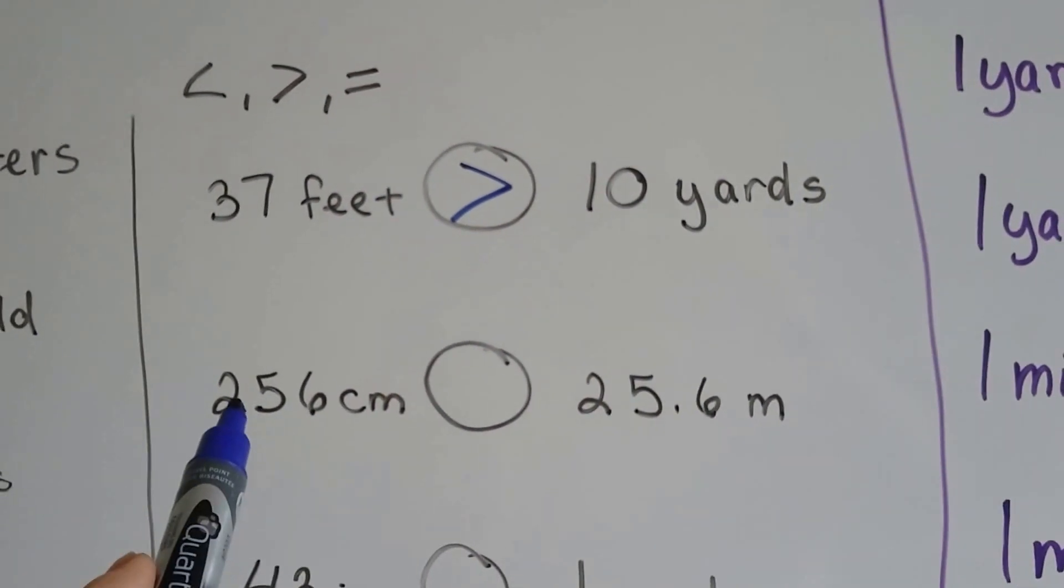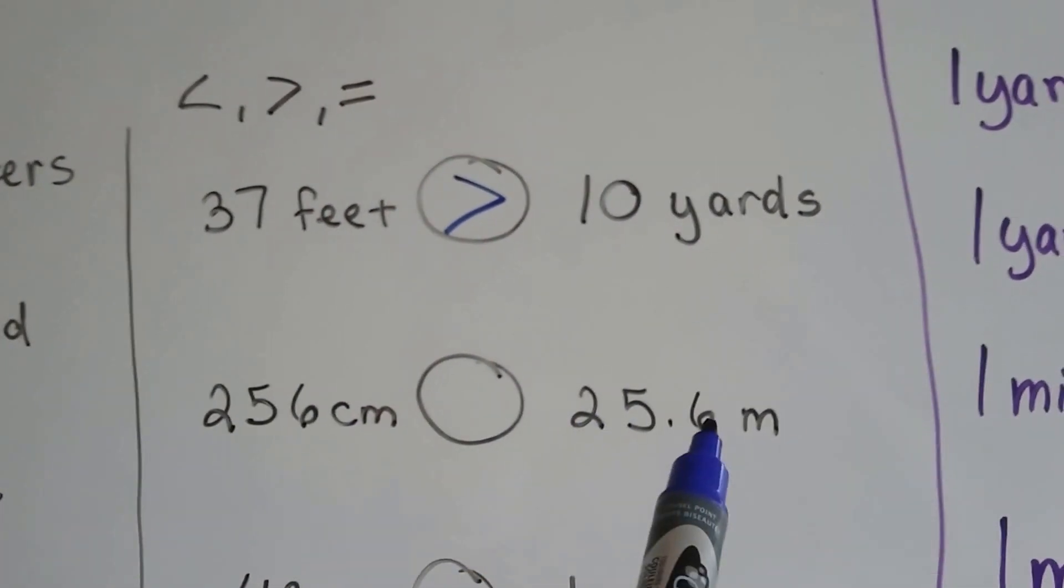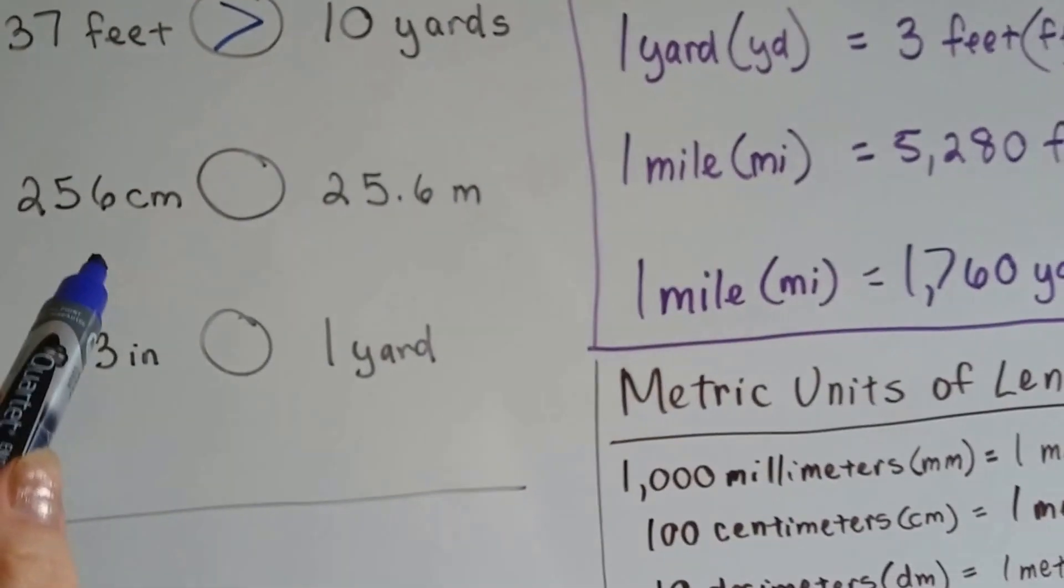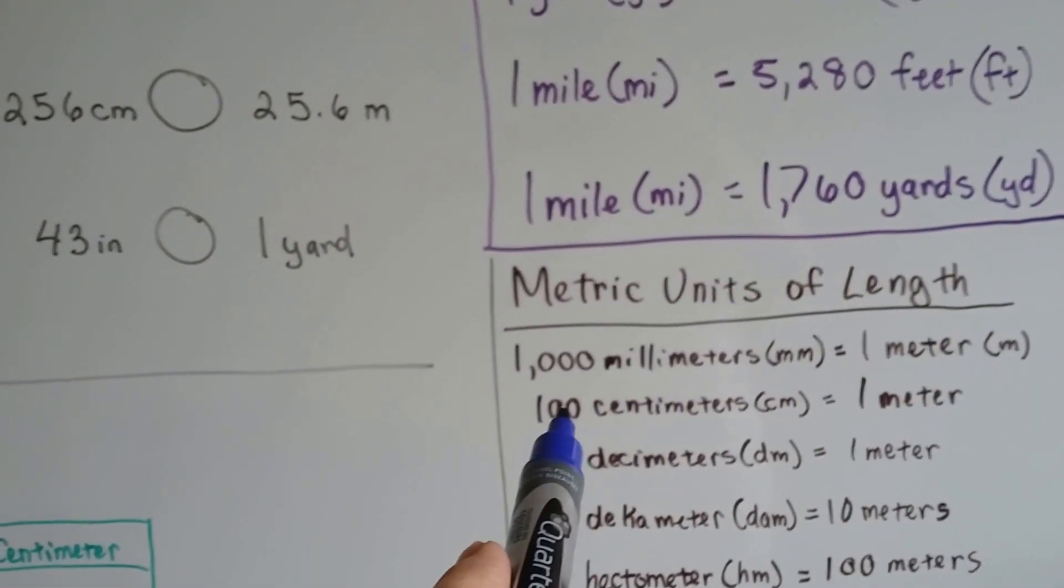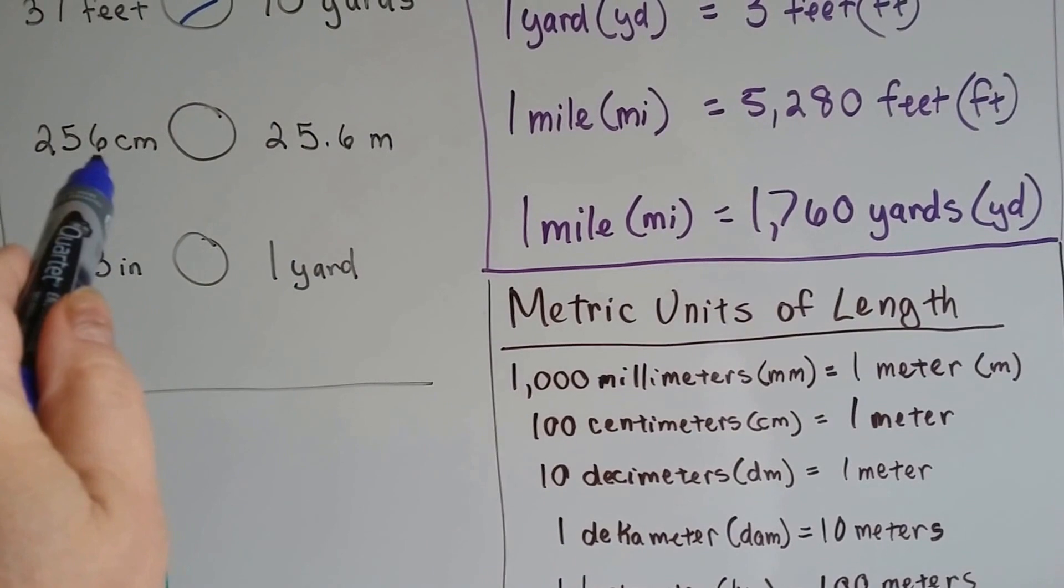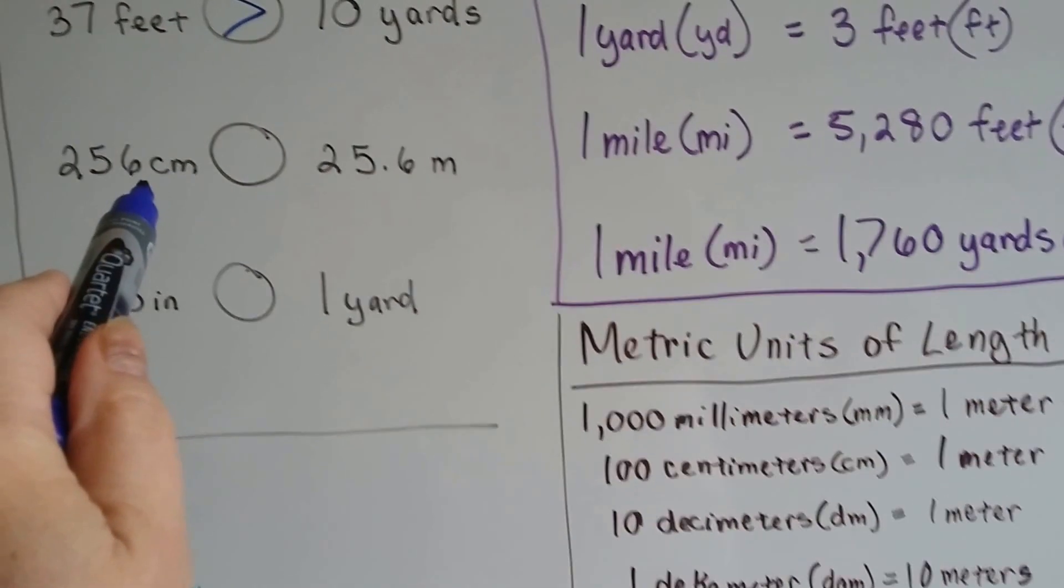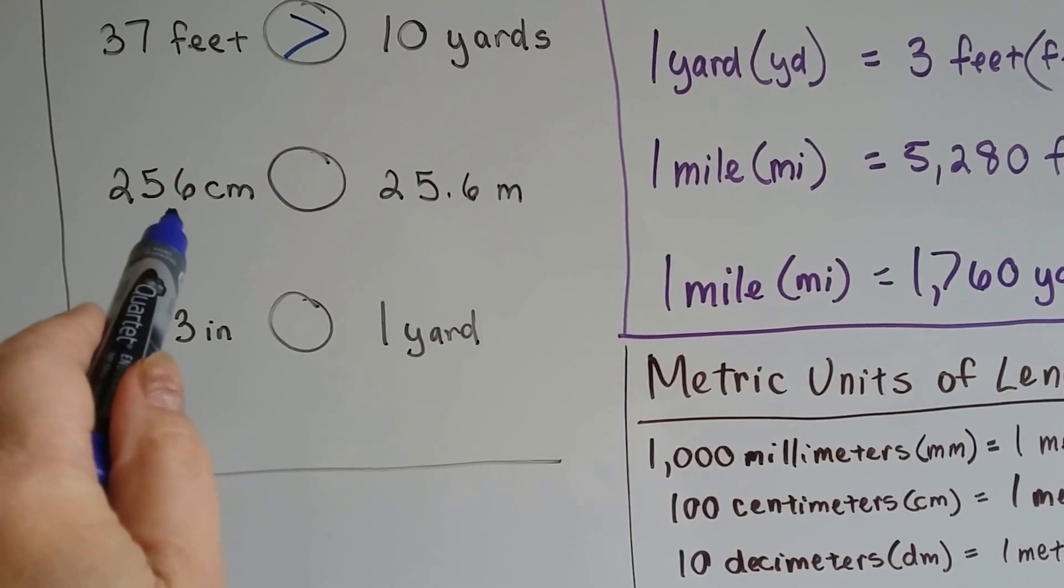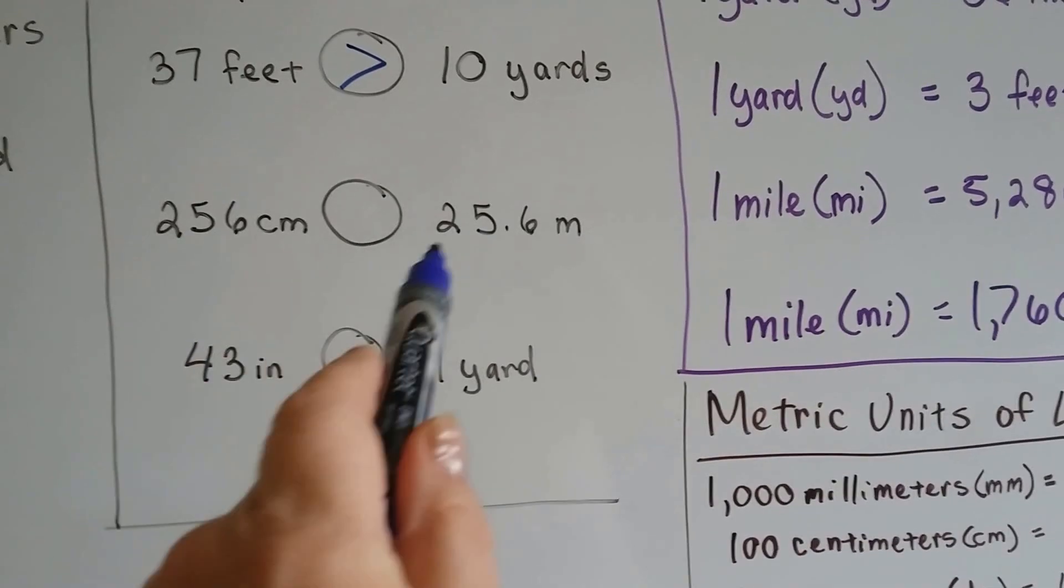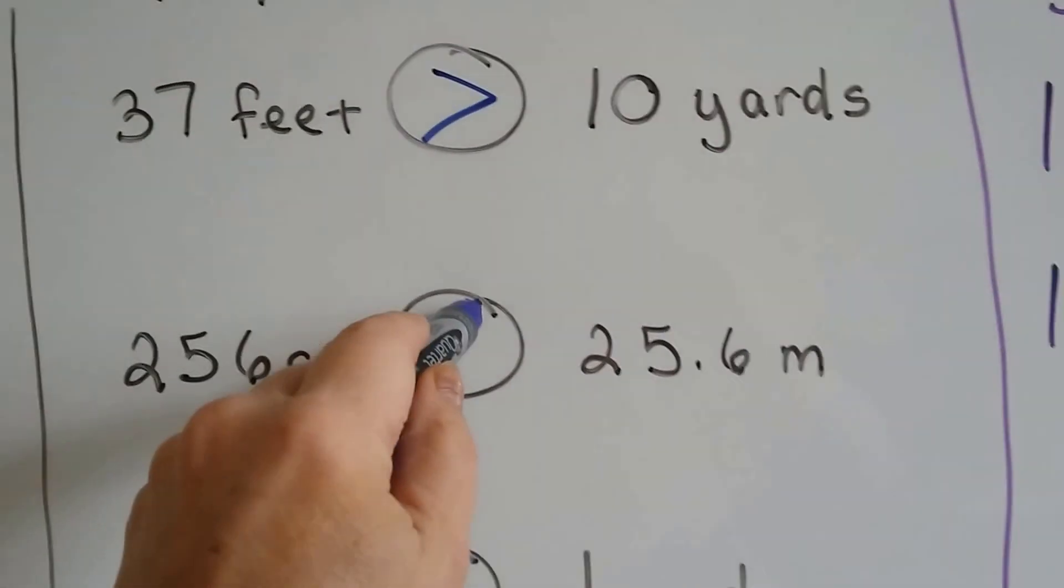Okay? Now we've got 256 centimeters or 25.6 meters. All right. Well, 256 centimeters. There's 100 centimeters in one meter. So if there's 100 centimeters in one meter, how many meters are in here? 100 is one meter. So if there's 256, there's like two and a half meters. There's 25.6 meters here. This is way bigger, isn't it?